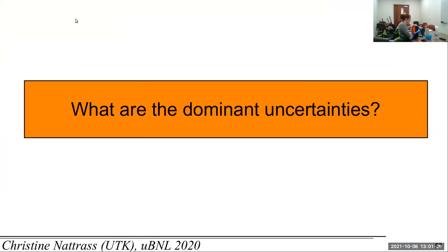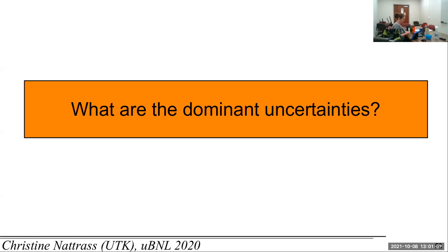I'm going to talk a little more about how we do the measurement, and that matters because it gets into the motivation behind why we're doing all of this stuff with Rivet. If you're trying to make a better measurement, you can always improve uncertainties, but you usually start by focusing on the largest uncertainties, because that's the way you make the measurement more accurate.